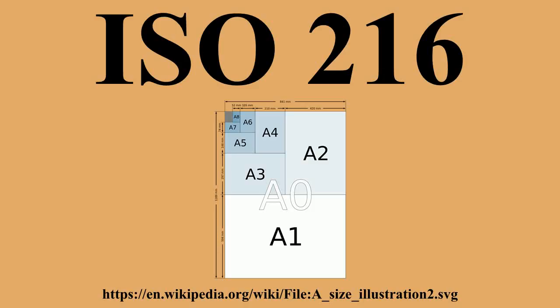ISO 216 and its related standards were first published between 1975 and 1995: ISO 216:2007 defining the A and B series of paper sizes; ISO 269:1985 defining the C series for envelopes; ISO 217:2013 defining the R and SRA series of raw paper sizes. The tolerances specified in the standard are ±1.5 mm for dimensions up to 150 mm, ±2.0 mm for dimensions in the range 150 to 600 mm, and ±3.0 mm for dimensions above 600 mm.